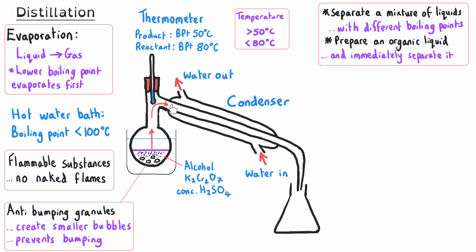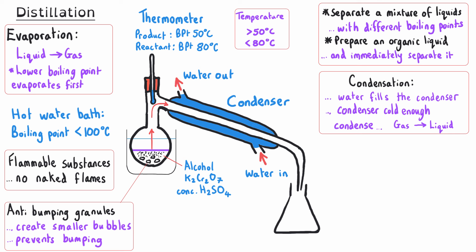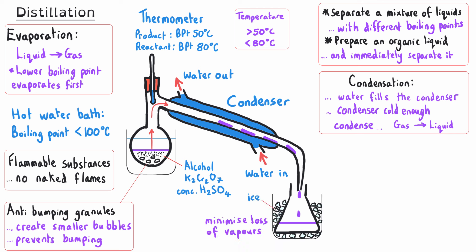From here, our vapors move into the condenser, which is a glass tube with a water jacket around it. The water goes into the condenser from the lower entry point and comes out of the top, ensuring the condenser is fully filled and cold enough to condense the vapors and turn those gases back into liquids. The liquids forming in the condenser will run down and collect in a suitable collection vessel underneath the condensing tube. We might also place our collection flask inside a container of ice to make sure vapors don't escape without fully condensing. The liquid that collects is called the distillate.